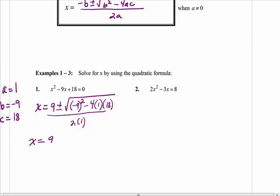When you square a negative and the negative is in the parentheses, the product becomes positive. So x equals 9 plus or minus, negative 9 squared is positive 81. Put down the minus sign, and then do the multiplication. 4 times 1 is 4, 4 times 18 is 72. If you have trouble multiplying 4 times 18, you can double 18 and then double that. Doubling 18 gives you 36, doubling 36 gives you 72.